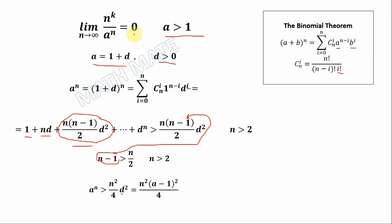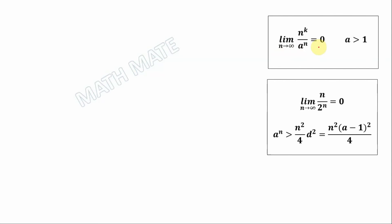We are going to prove this limit equality and we use this inequality in our further proof. Let's look at the case when k is less than or equal to zero. In that case, n to the power of some negative k gives us 1 over n to some positive power p, and it is obvious that this limit goes to zero.